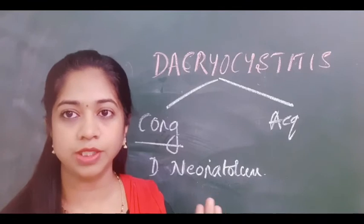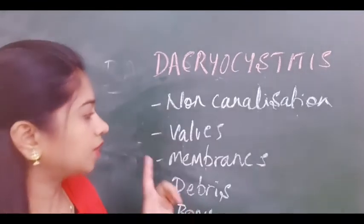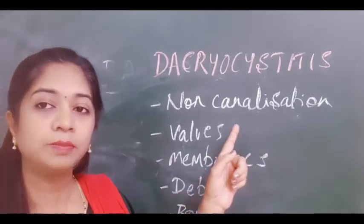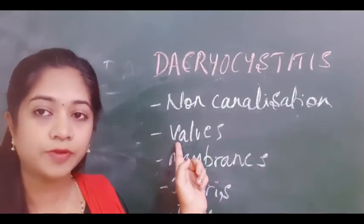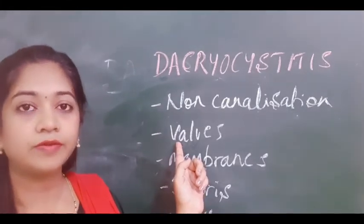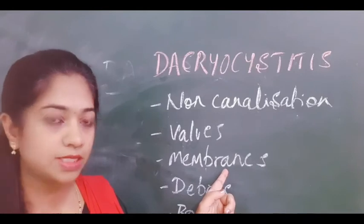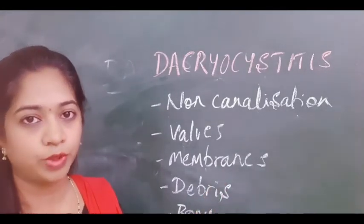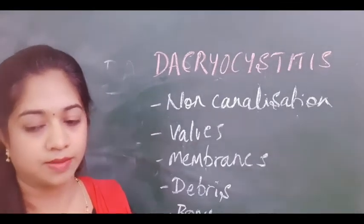The obstruction can be secondary to membranes in the nasolacrimal duct, or secondary to debris, or even bony obstruction. So the causes are: non-canalization or partial canalization of the nasolacrimal duct, obstruction by the valve of Hasner or the valve of Rosenmuller, membranes, debris, or bony obstruction. These are the causes for congenital dacryocystitis.